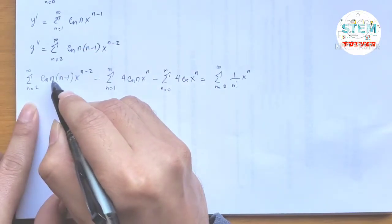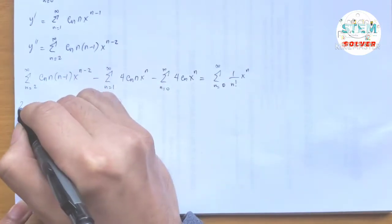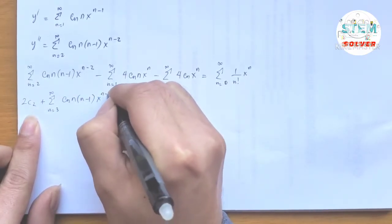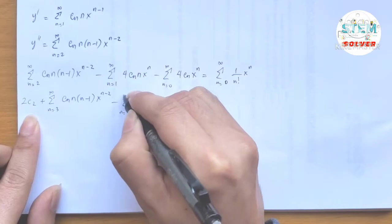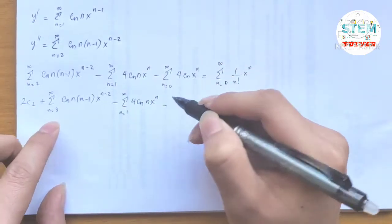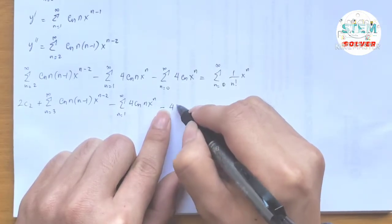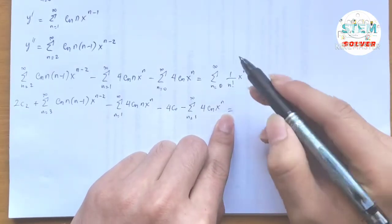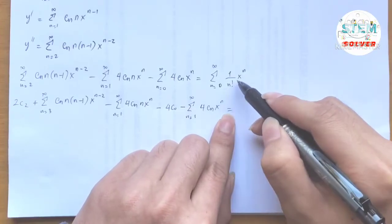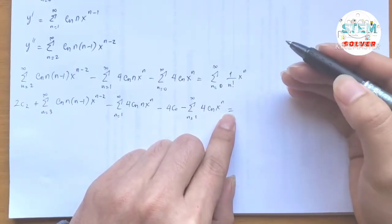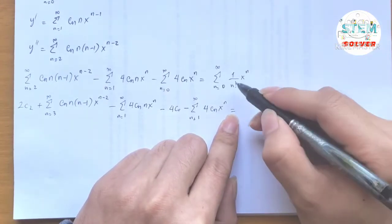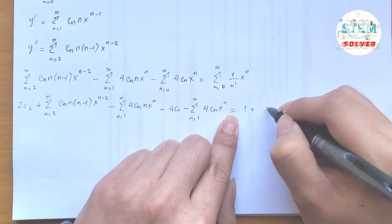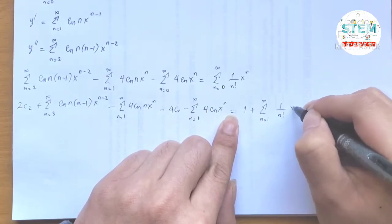Running out the first series at n=2: 2·(2−1) = 2·1 = 2, giving 2c₂, plus the power series from 3 to infinity of c_n · n · (n−1) · x to the n−2. For the second series, we rewrite and run out n=1: 4c₁ · 1 · x to the first, minus the power series from 1 to infinity of 4 c_n · x to the n. For the third series, run out n=0: giving 4c₀, minus the power series from 1 to infinity of 4 c_n · x to the n.